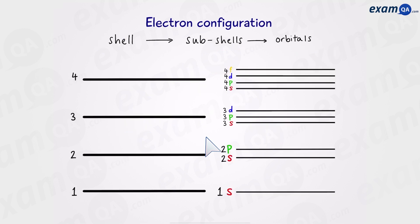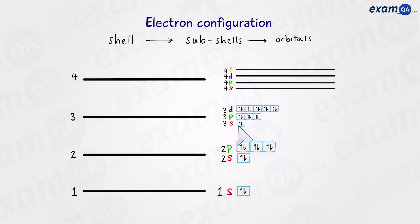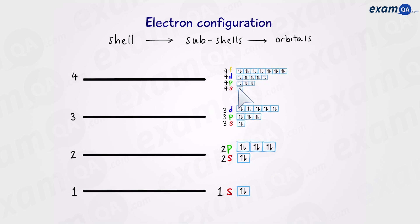Going back to our picture, we can now include the orbitals. The first shell has 2 electrons because it only has an s subshell. In the second shell we have 8 electrons: 2s and 6p. In the third shell we have 18 electrons: 2 from s, 6 from p, and 10 from d. And in the fourth shell we have 32 electrons. So now we have a general understanding of shells, subshells and orbitals.